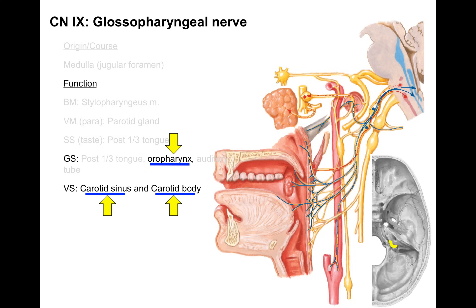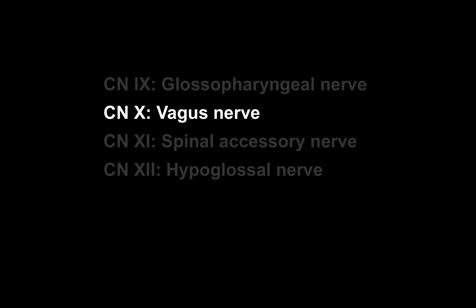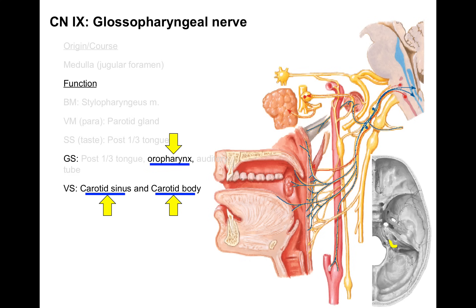For clinical relevance, the most important functions are general sensation to the oral pharynx and the carotid sinus and body. The oral pharynx is important because it initiates the gag reflex — touching the back of the throat is the sensory limb that causes pharynx contraction. The carotid sinus and body are important for measuring blood pressure, oxygen, and CO2 via the baroreceptor reflex. These are the three things you'll be tested on for exams and boards.